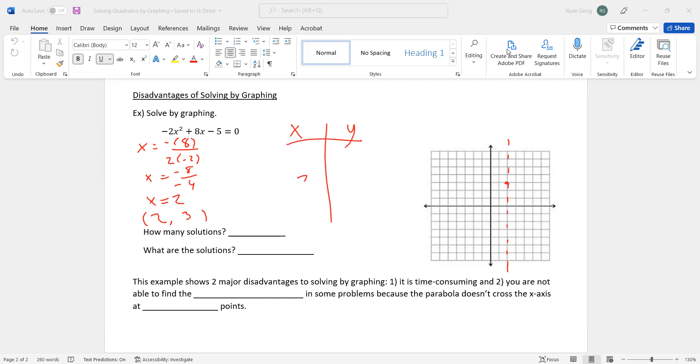Making a table now. 2, 3. 2 smaller would be 1 and 0. 2 bigger, 3 and 4. 0 + 0 - 5 is -5. 1² is 1 times -2 is -2. Plus 8 is 6. 6 - 5 is 1. So 1, 1. 0, -5. 3, 1. 4, -5.